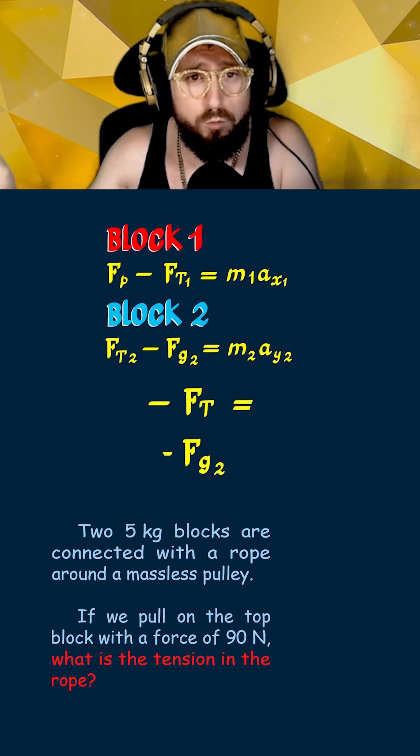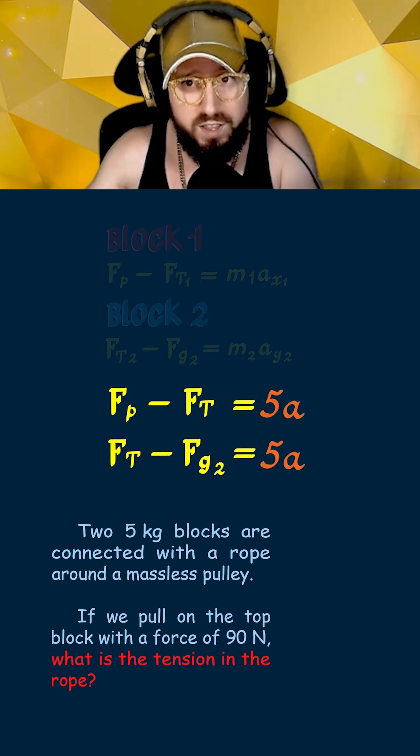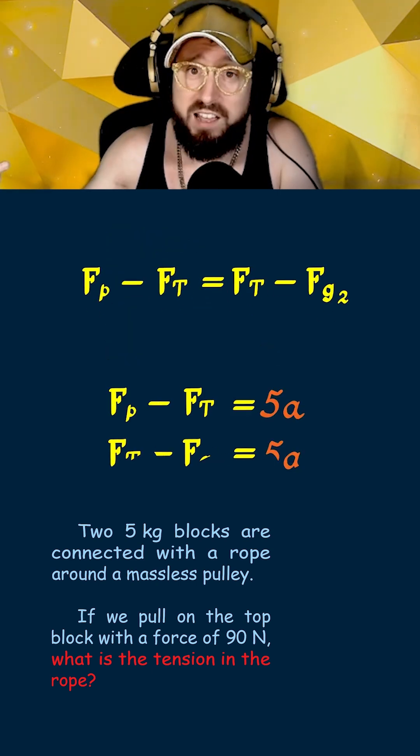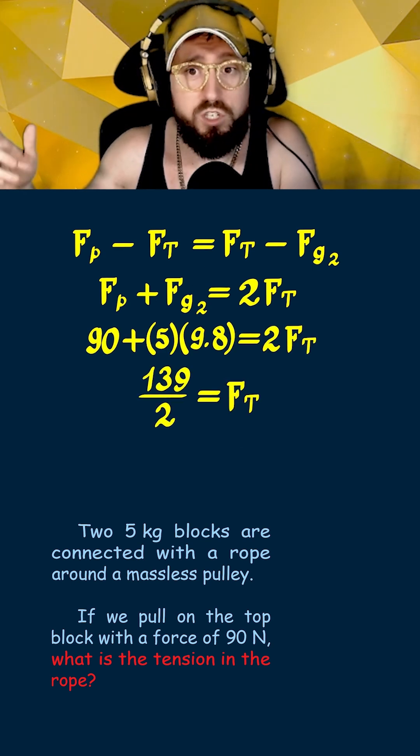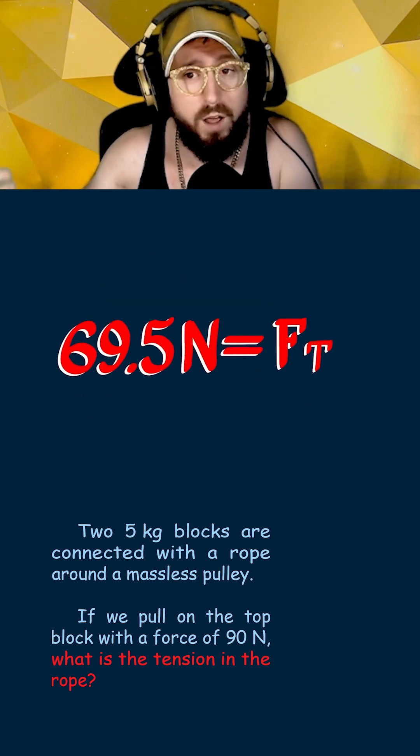Using these facts, we can now rearrange the two equations for the acceleration and set them equal to each other. The last step is to do some algebra to solve for the tension in the rope, which gives us our final answer of 69.5 Newtons.